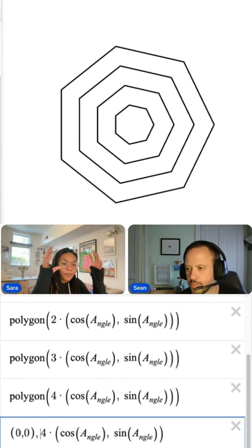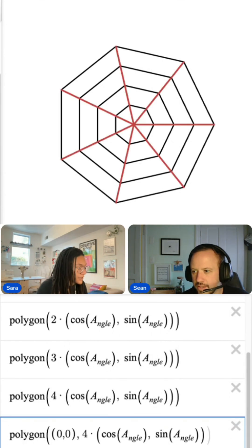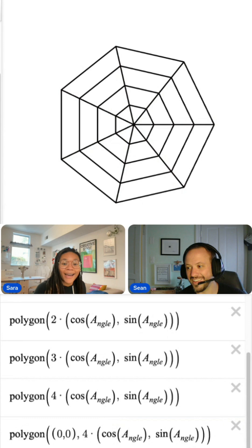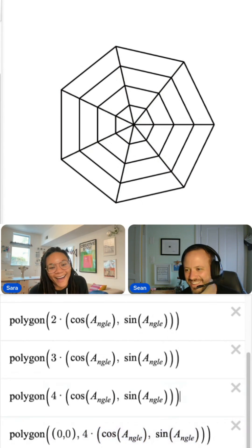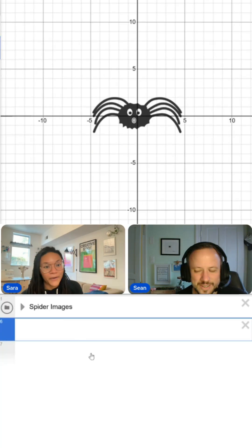I want all of those points to connect to zero comma zero. Whoa. I honestly wish I could explain better why. I'm going to send it over to Sean who is going to make a spider.